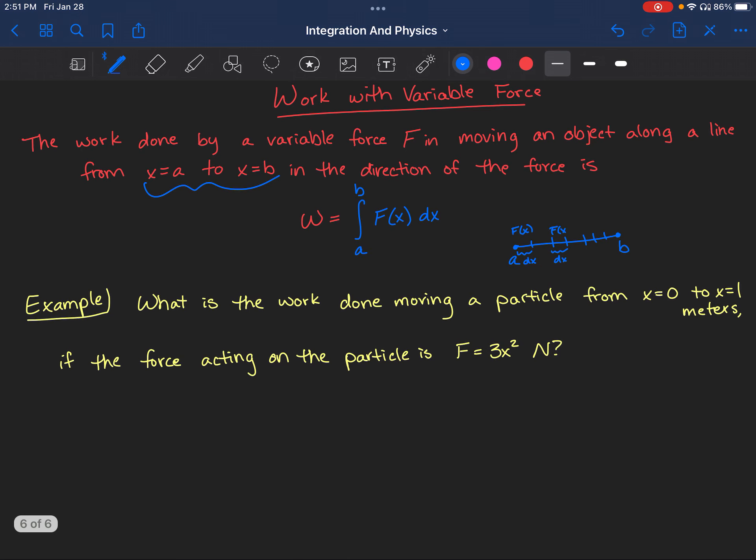Going into my example here: What is the work done moving a particle from x=0 to x=1 meters? That's important - that's my distance. If the force acting on the particle is F=3x² newtons. I'm going to set up my integral. Our distance is from 0 meters to 1 meter and our force is 3x² dx. This is in newtons and my distance is measured in meters.